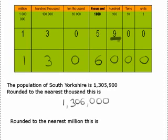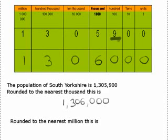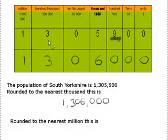The question then asks us to round the number to the nearest million. To do that we need to look at the hundred thousands column. In the hundred thousands column we've got a three.